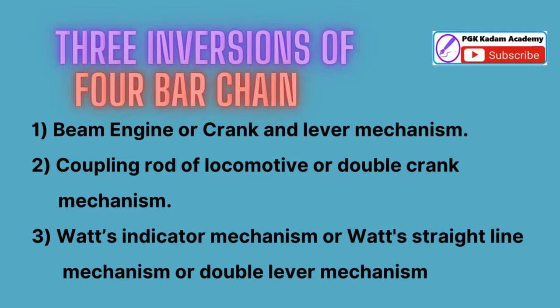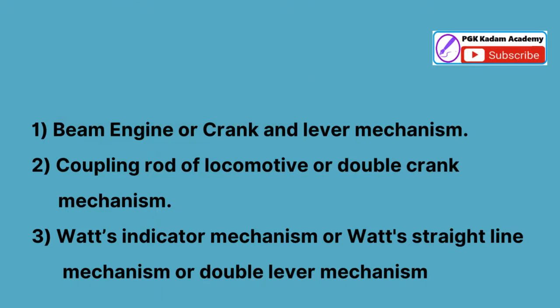There are three inversions of four-bar chain: 1. Beam engine or crank and lever mechanism, 2. Coupling rod of locomotive or double crank mechanism, 3. Watt's indicator mechanism or Watt's straight line mechanism or double lever mechanism.